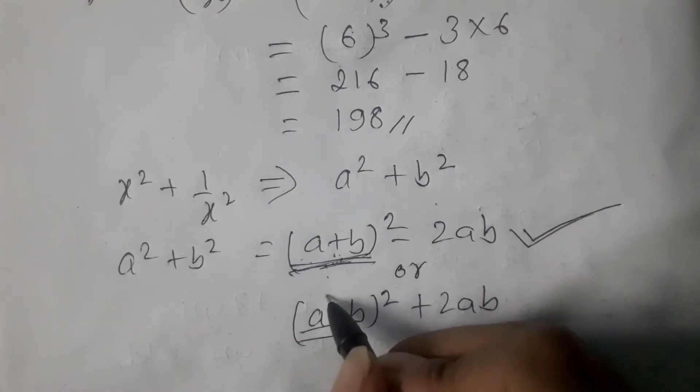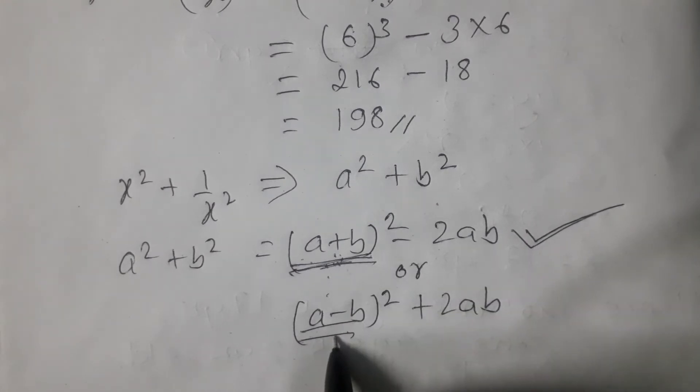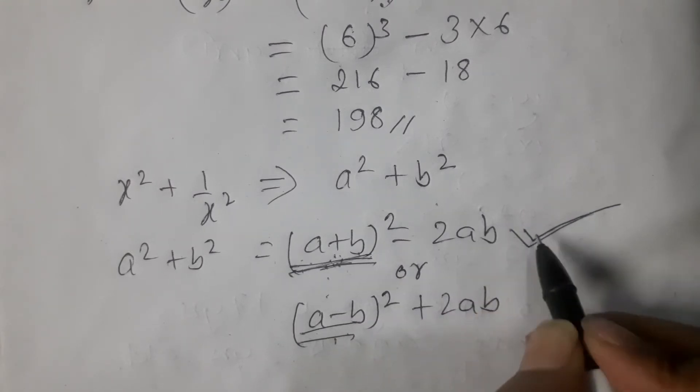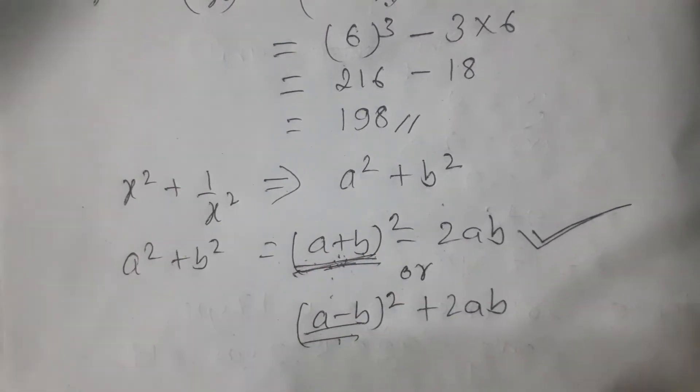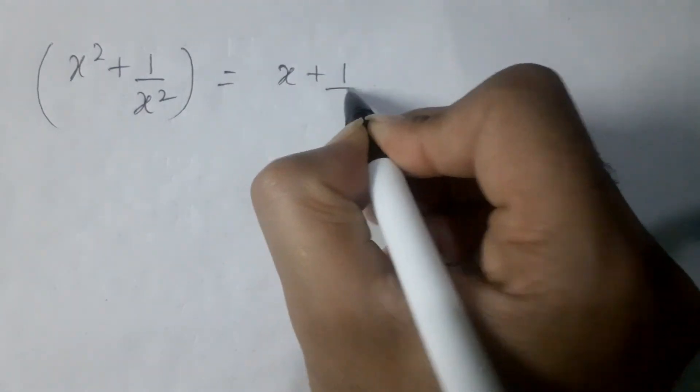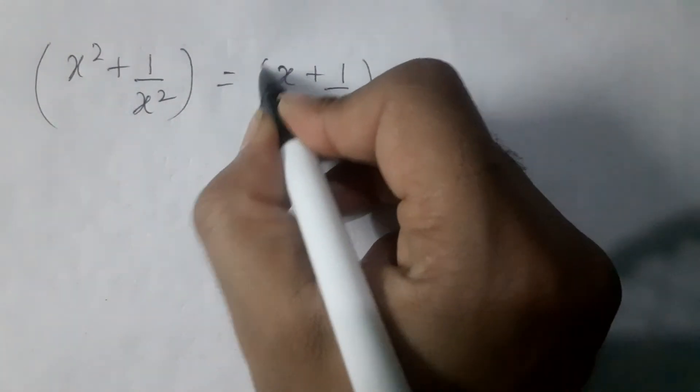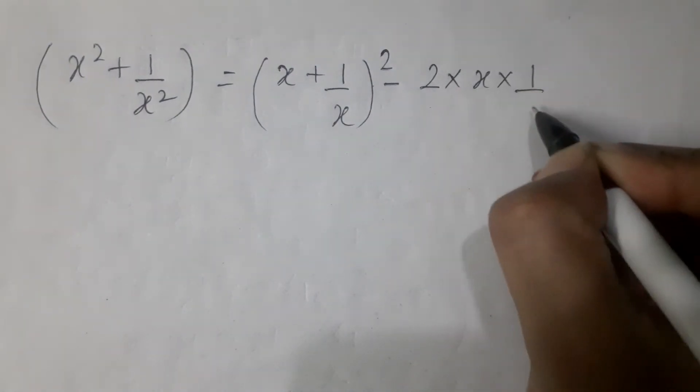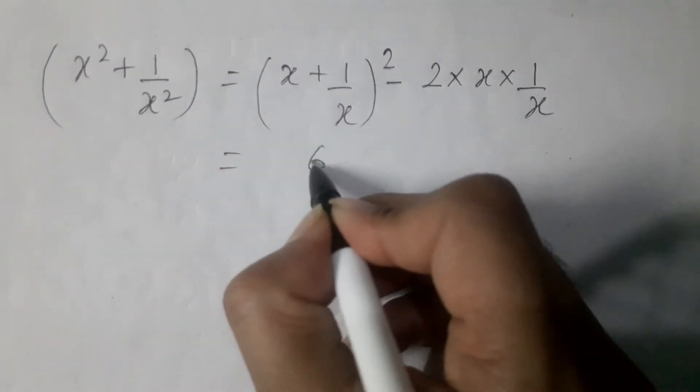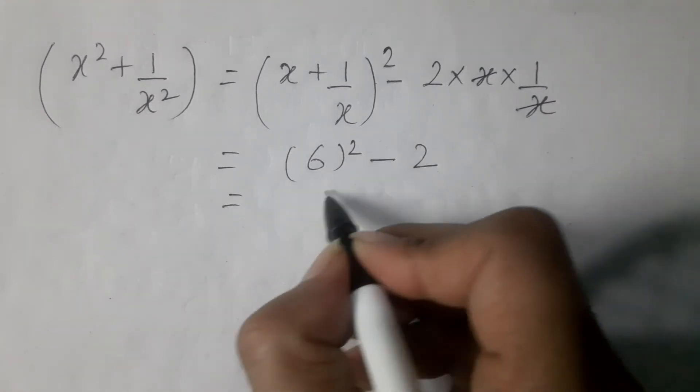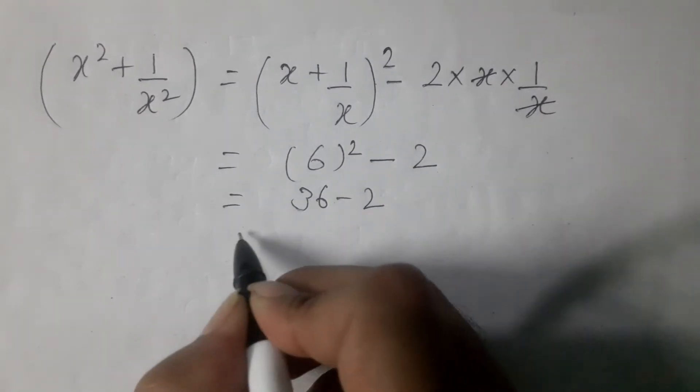We use the formula. x² plus 1 by x² equals x plus 1 by x squared minus 2 times x times 1 by x. So x² minus 2 equals 36 minus 2 equals 34.